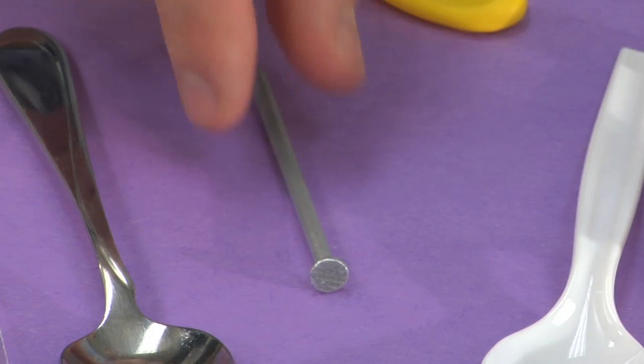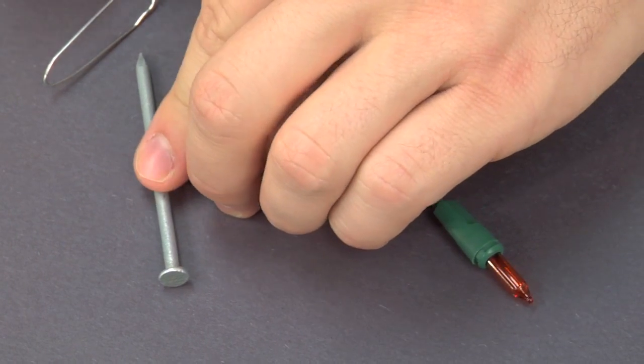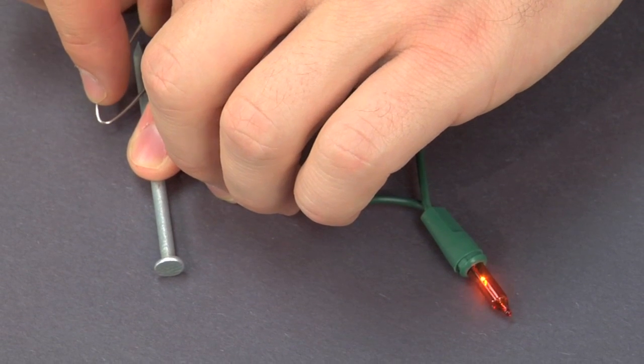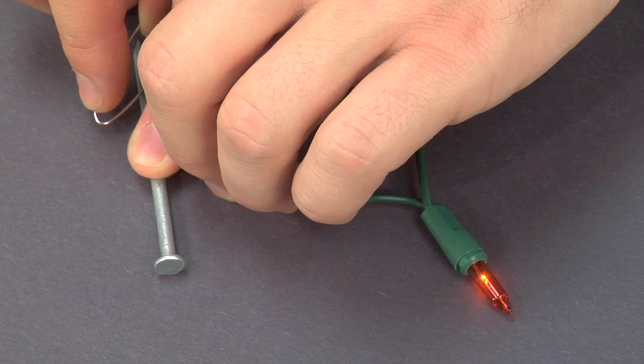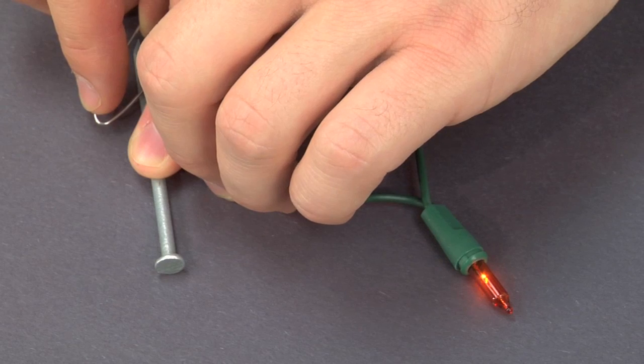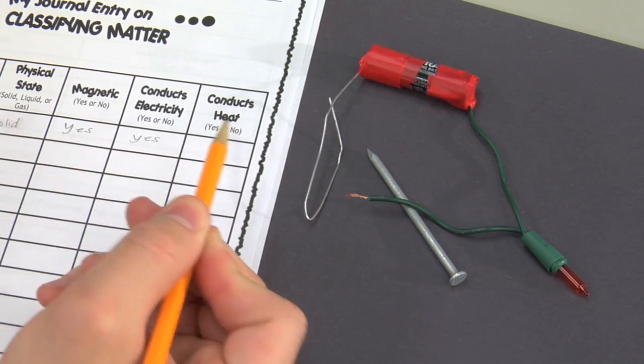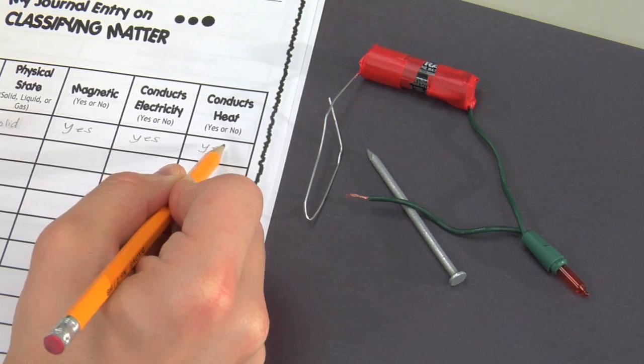Now test an object for conductivity. Attach the free end of the Christmas light wire and the untaped end of the paper clip to the object. If the Christmas light illuminates, the object conducts electricity. Record the object's physical properties in the student journal.